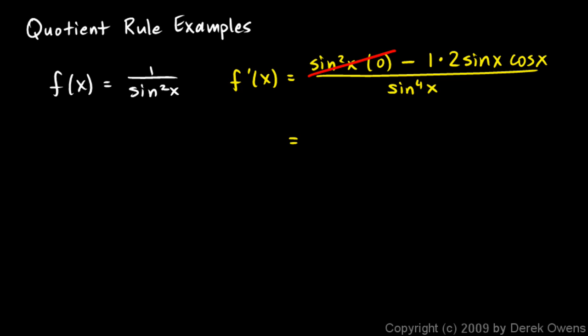This term goes to 0, and we're left with negative 2 sine x cosine x over sine to the fourth x. Then a sine x will cancel, and so this will give us negative 2 cosine x over sine cubed x.